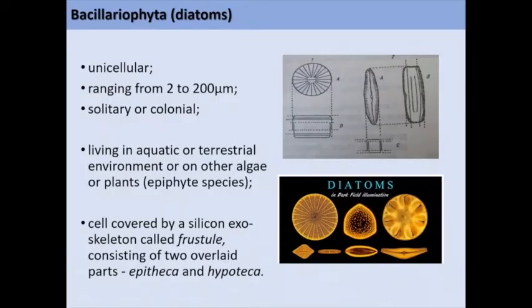Among all those groups, the diatoms are the most important. They are unicellular algae ranging from 2 to 200 microns. They are solitary or colonial, living in aquatic or terrestrial environments or on other algae or plants. Their cell is covered by a silicon exoskeleton called frustule, consisting of two overlaid parts which are named epitheca and hypotheca.